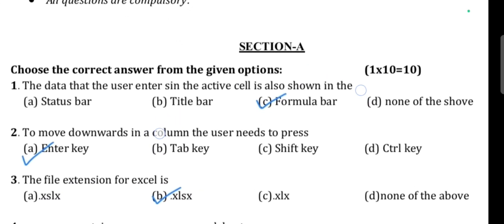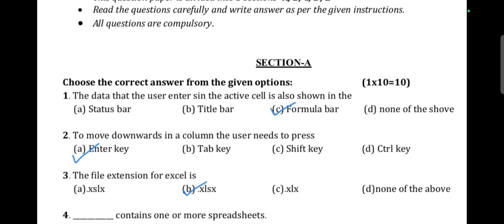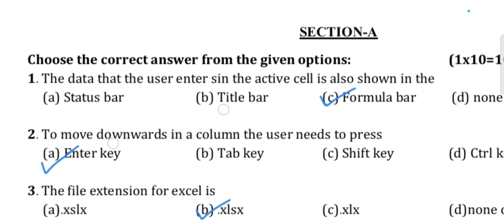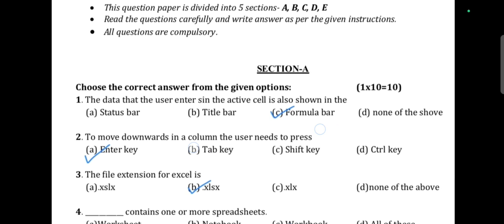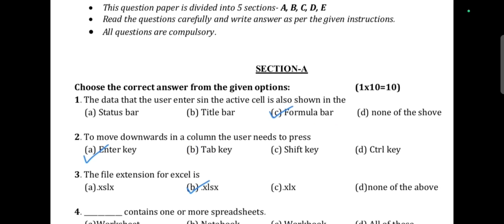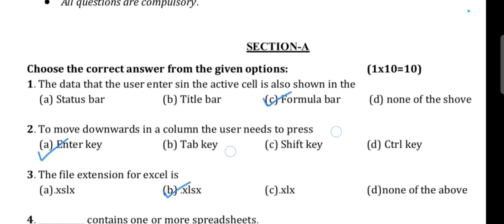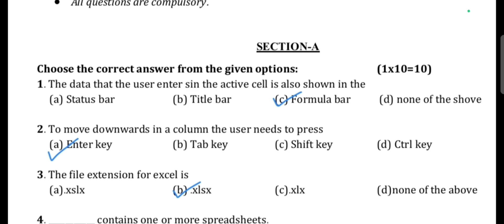Question number 1: The data that the user enters in the active cell is also shown in the formula bar. So when you enter data in Excel's active cell, it shows there. The correct option is option C — formula bar.